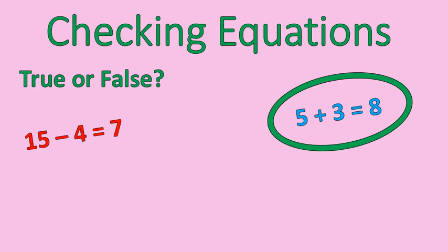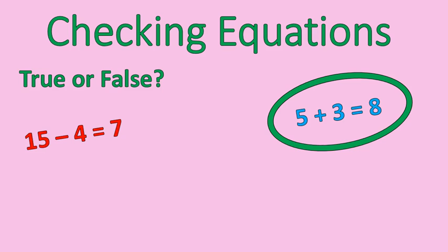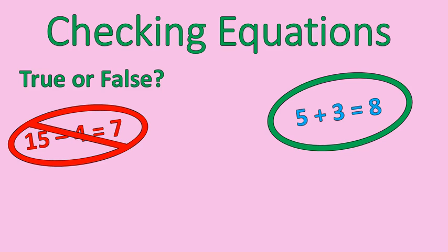How about this one? 15 minus 4 is equal to 7. Is this a true equation or false? Exactly — that one's a false equation. 15 minus 4 is equal to 11, so this is not a true equation. It's not balanced. The left side of the equal sign is not equal to the right side.